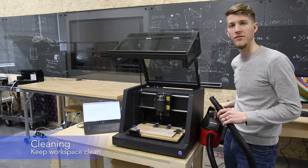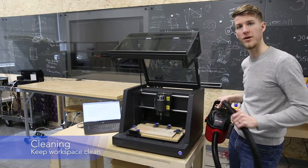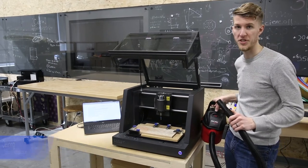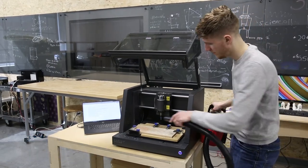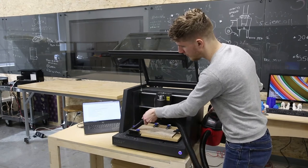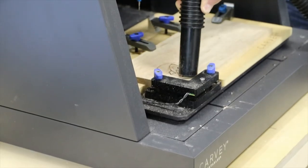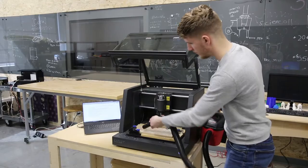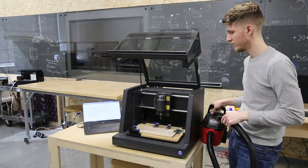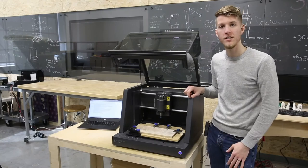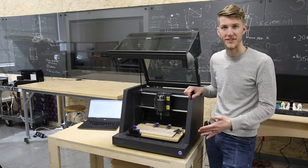Now that we're done cutting, we can use the vacuum to vacuum up all the sawdust before we remove it from the machine. Now that the mess is all cleaned up, I can remove the material from the Carvi.